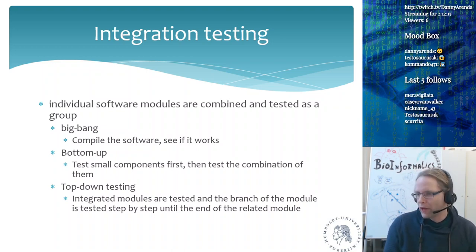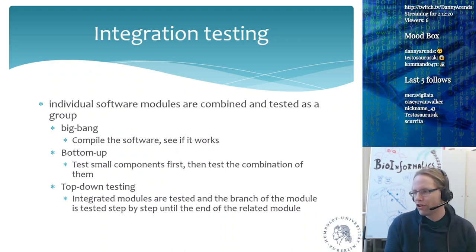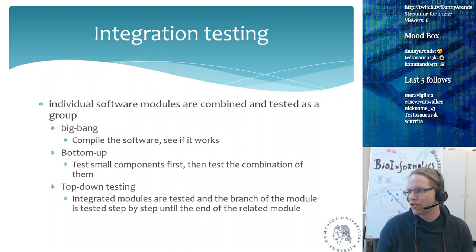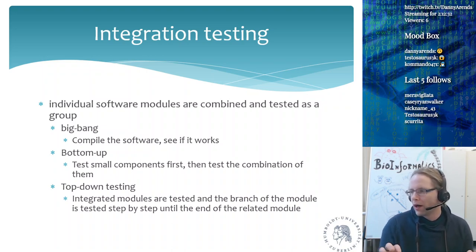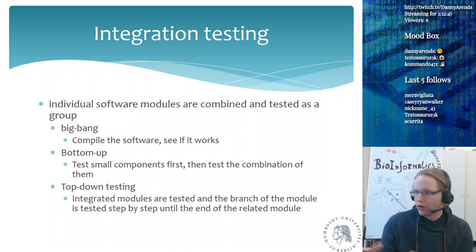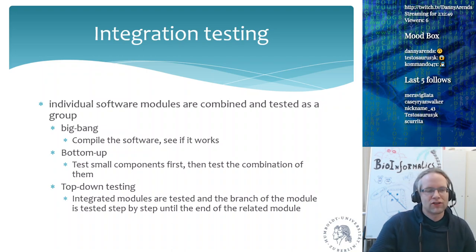There's also top-down testing, which goes the other way around. Integrated modules are tested and the branches of the modules are tested step-by-step. You view software as a tree — at the bottom you have the smallest modules, which combine into bigger modules, which combine into the whole software package. Big bang just compiles and sees if it runs. Bottom-up tests the leaves first and works up the tree, while top-down does a big bang compilation test then examines individual components.